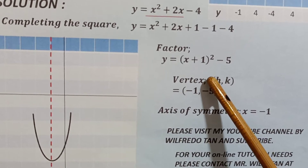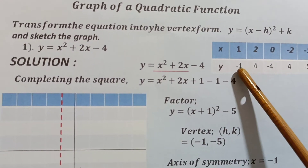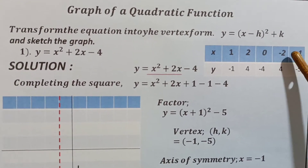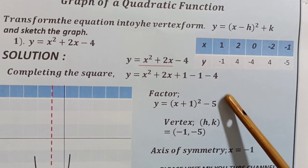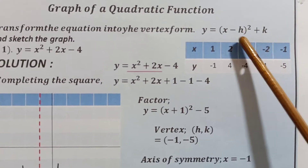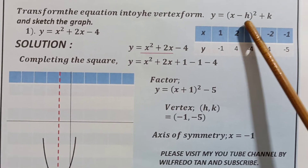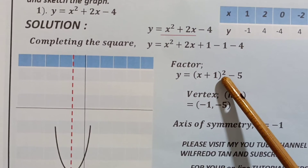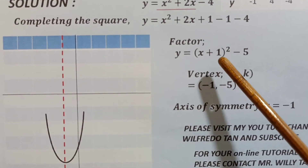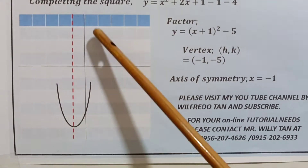We're going to graph this one by assigning values to the original equation. If x is equal to 1, y is equal to negative 1; if x is equal to 2, y is equal to 4; and also 0, negative 4, negative 2, and 4, negative 1, and 5. Comparing to the vertex form formula, h and k will be the vertex of the parabola. Our h is equal to negative 1 and our k is negative 5, so the vertex of this equation is at (−1, −5).